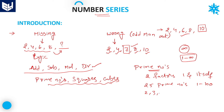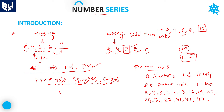The 25 prime numbers from 1 to 100 are: 2, 3, 5, 7, 11, 13, 17, 19, 23, 29, 31, 37, 41, 43, 47, 53, 59, 61, 67, 71, 73, 79, 83, 89, and 97. If you count all these numbers you will get 25 prime numbers in total.